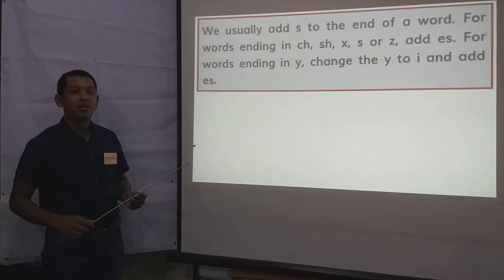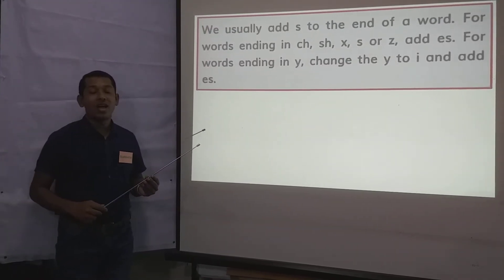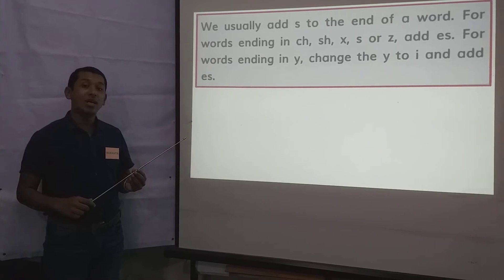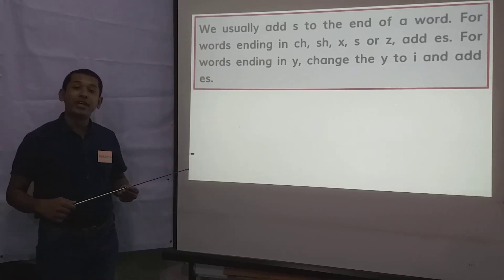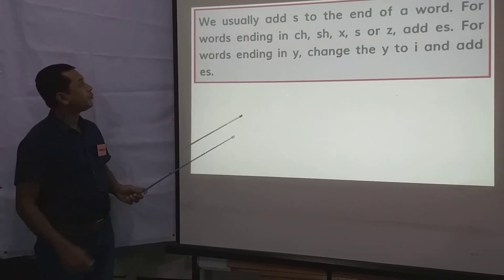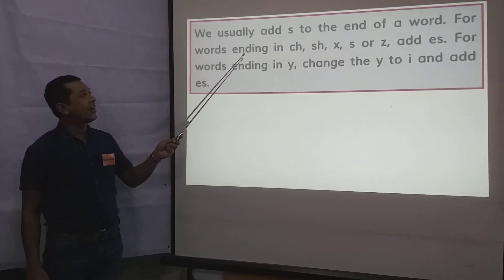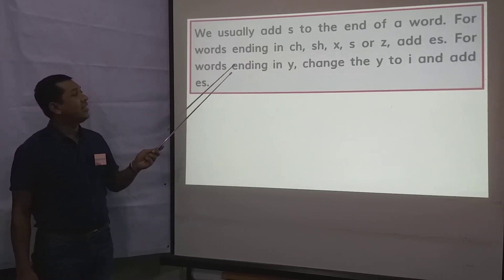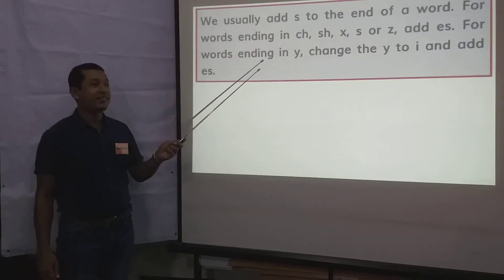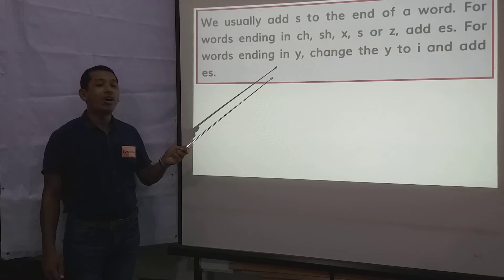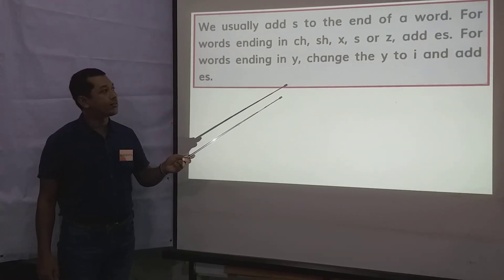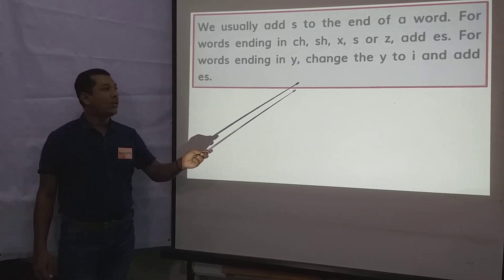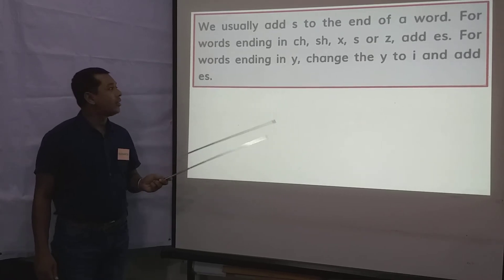Okay, my dear students, look at the screen. At first, I will read the text aloud and all of you listen to me and put your finger under the lines. We usually add S to the end of a word. For words ending in CH, SH, X, S, or Z, add ES. For words ending in Y, change the Y to I and add ES.